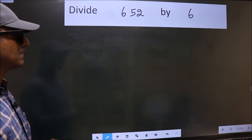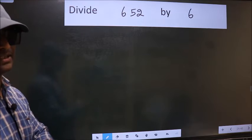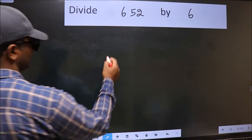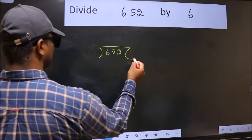Divide 652 by 6. To do this division, we should frame it in this way. 652 here and 6 here.